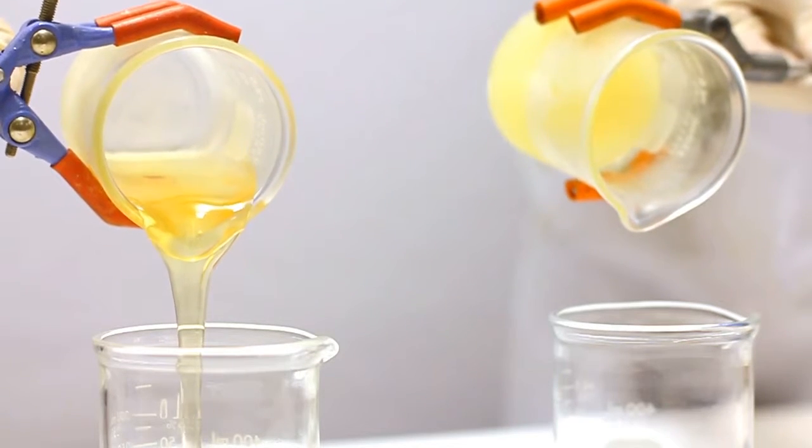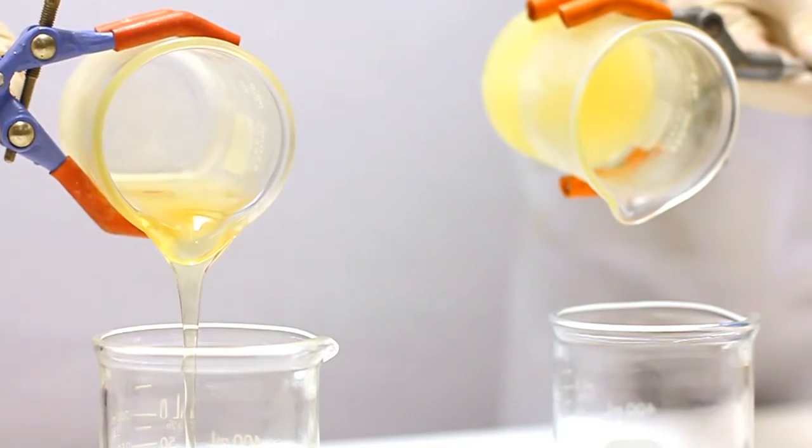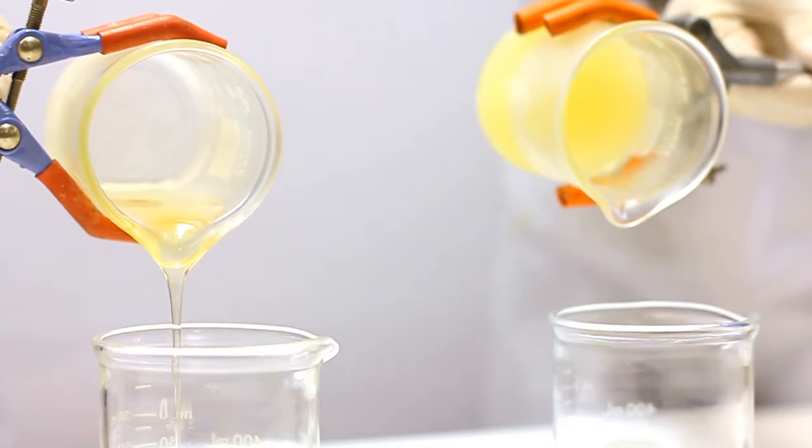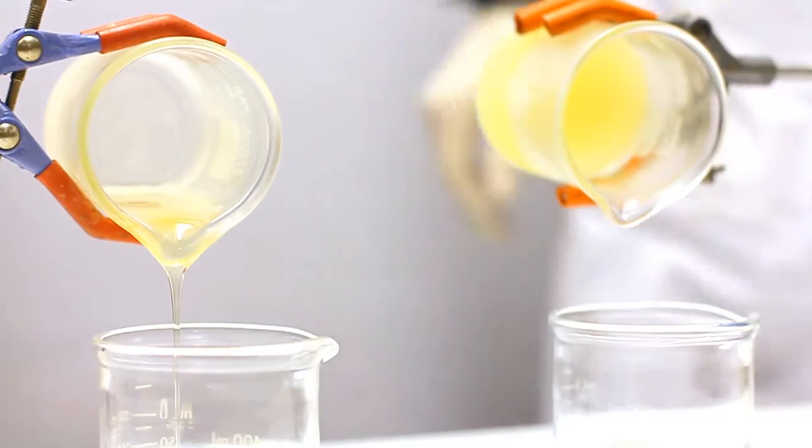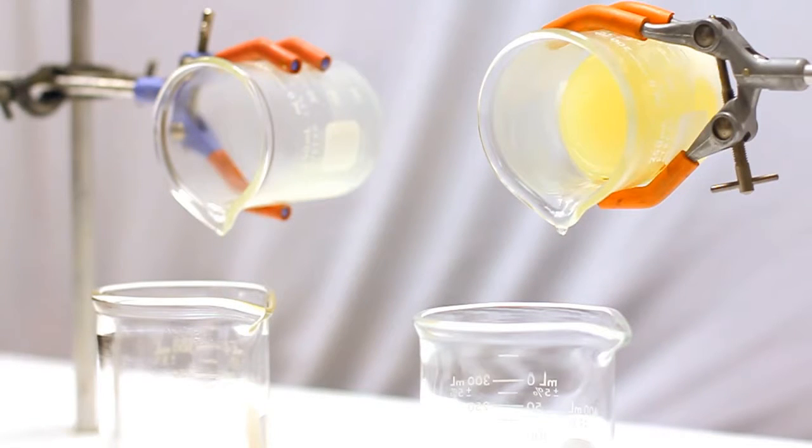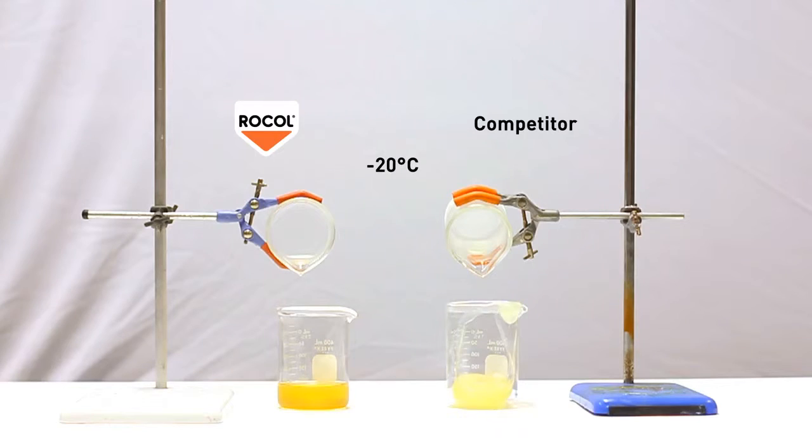These are the same two lubricants after being cooled to minus 20 degrees Celsius. ROCOL refrigeration compressor oil is still liquid, albeit with a much higher viscosity than at room temperature. The standard oil, however, has extensive wax crystal formation so has become solid. In fact, only after seven minutes of being exposed to room temperature does it start to become liquid and partially flow. The standard mineral oil lubricant is clearly not suitable for low temperature systems.